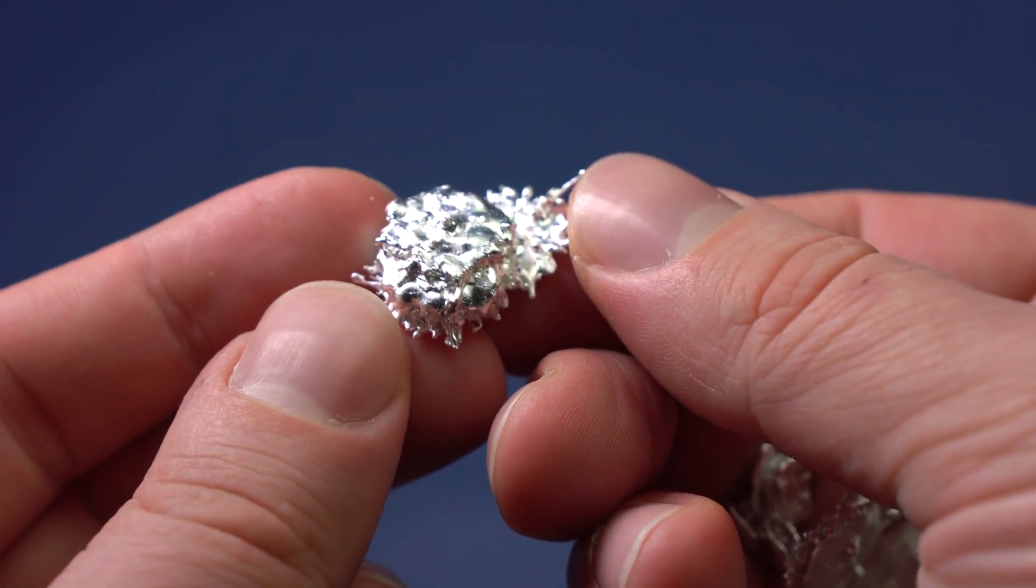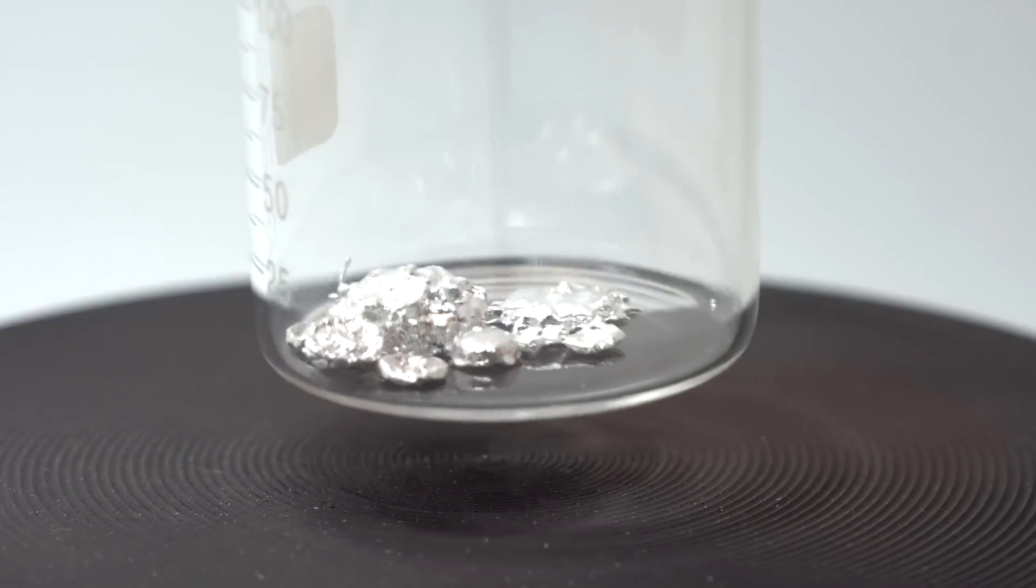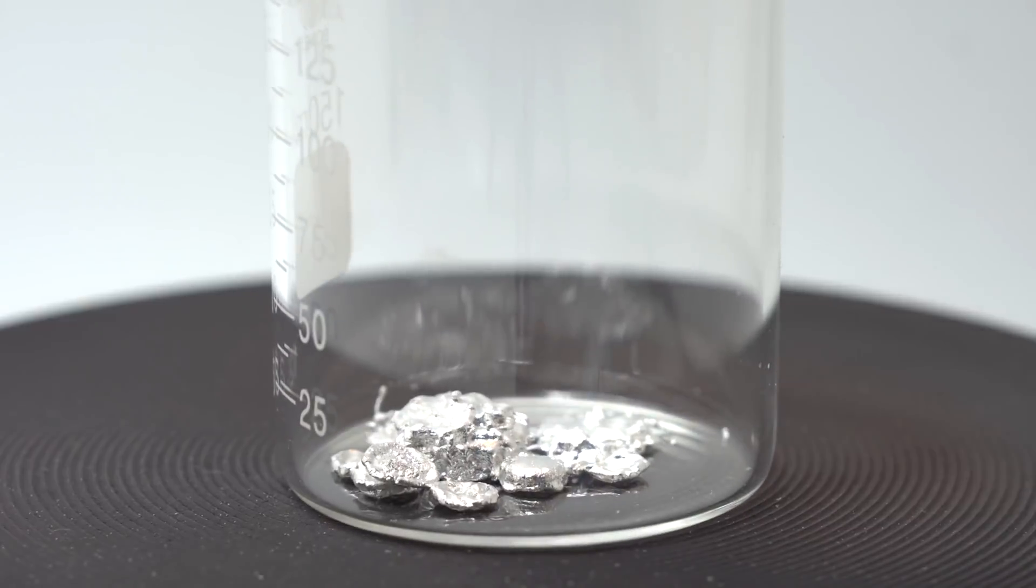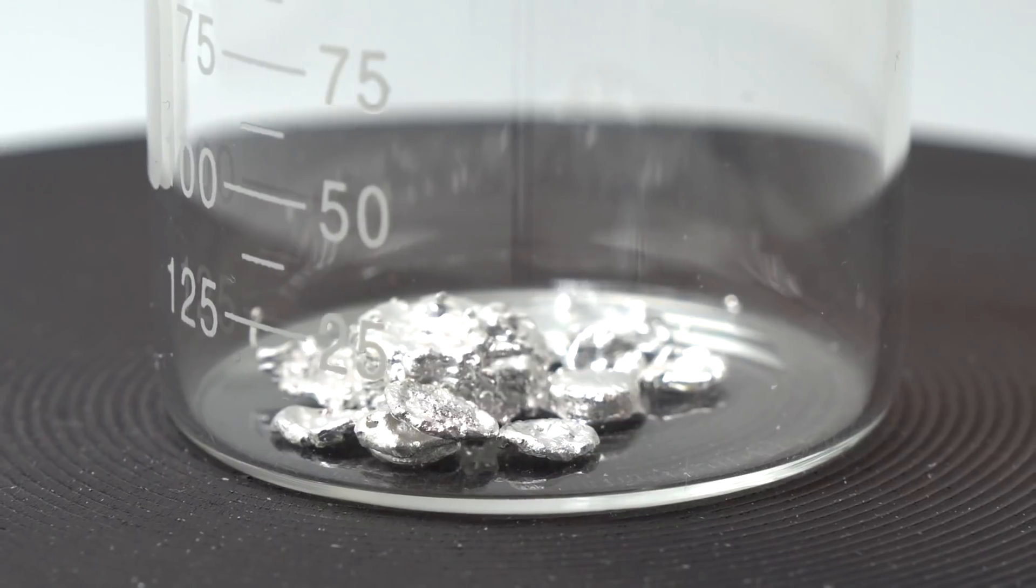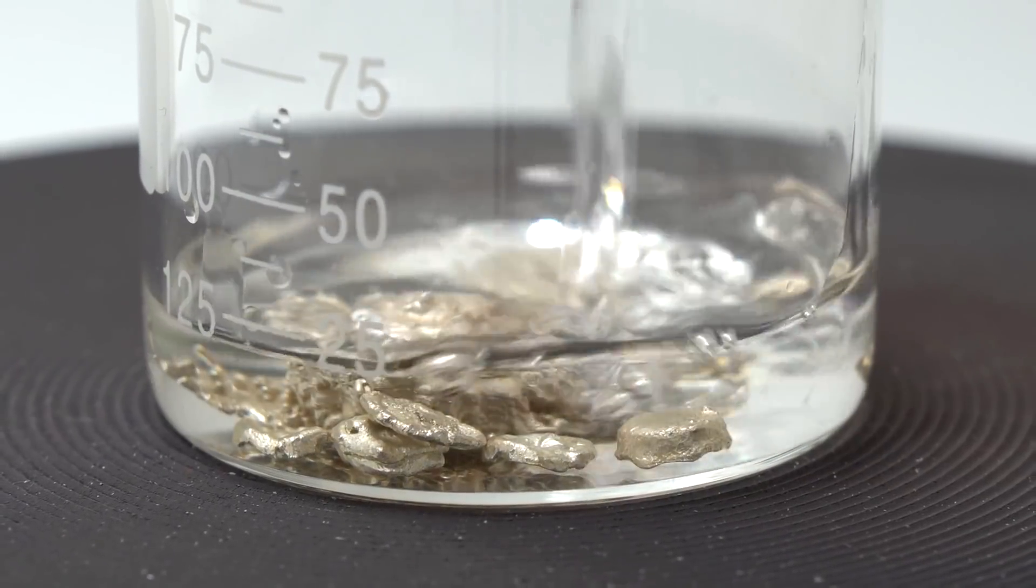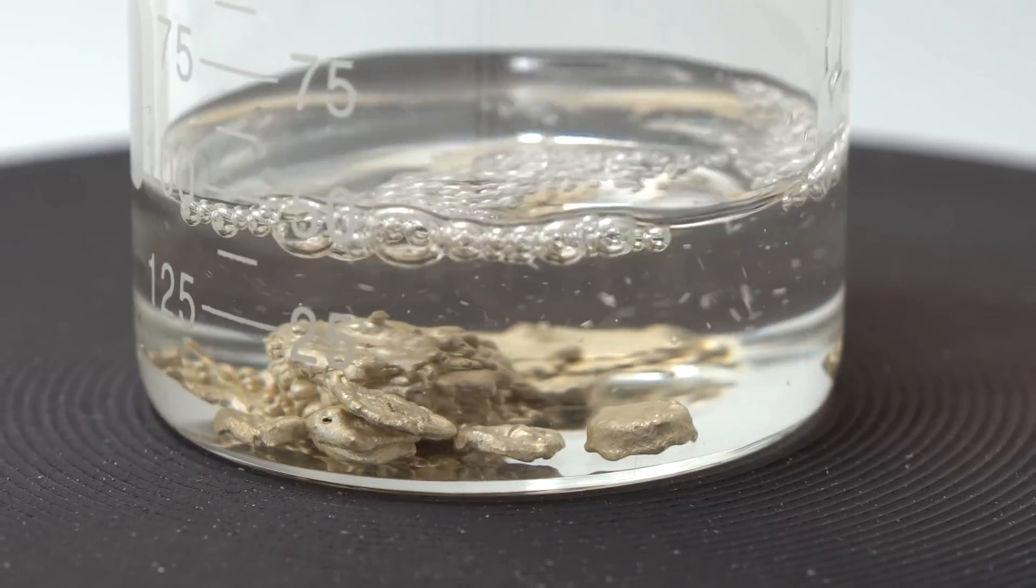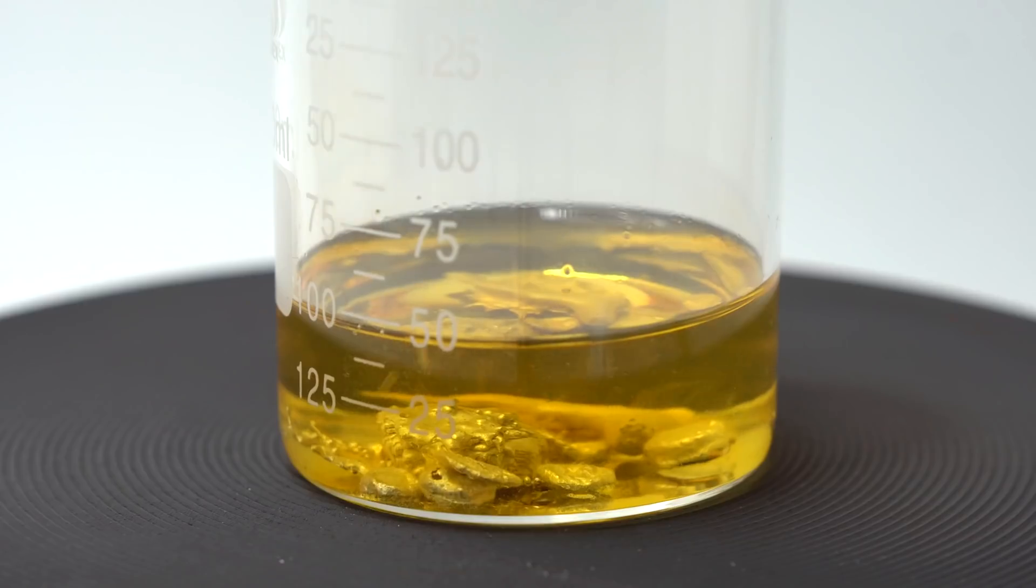Now I'm going to use drops of silver to make a soluble compound of this metal, which is silver nitrate. I'm pouring 50 milliliters of concentrated nitric acid over the silver drops, then I'm heating up the mixture to speed up the reaction.